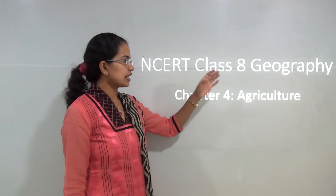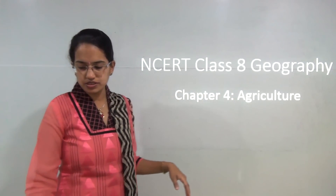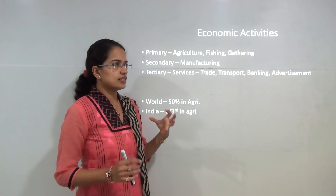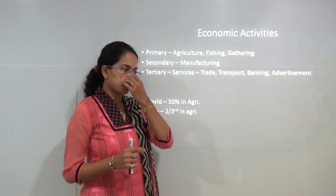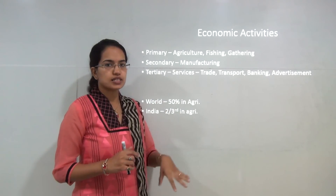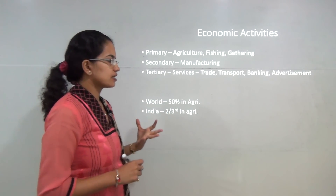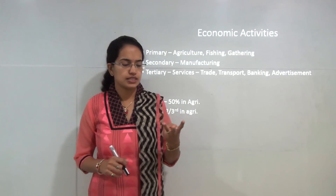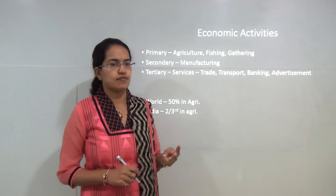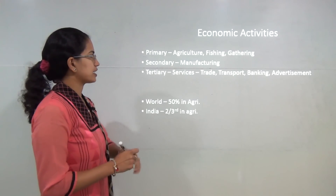We will start with the NCRT class 8 geography chapter 4 that talks about agriculture. Let's start with the various kinds of economic activity and why we will be studying agriculture today. When we classify economic activities, there are majorly three activities: primary, secondary, and tertiary activity.